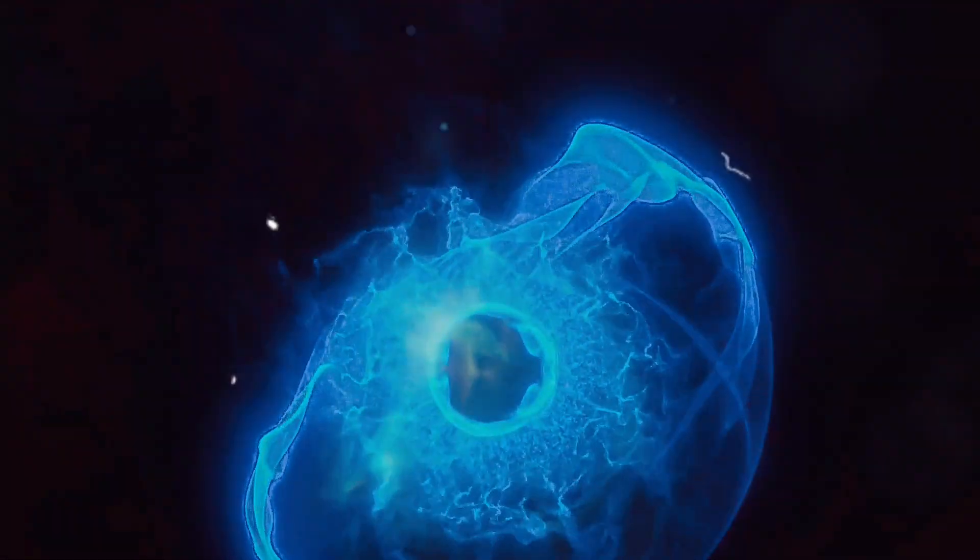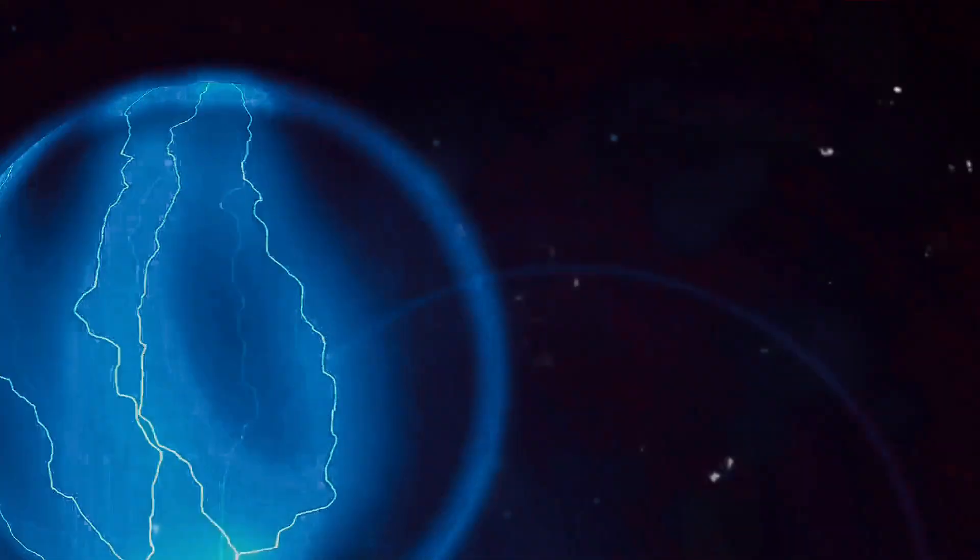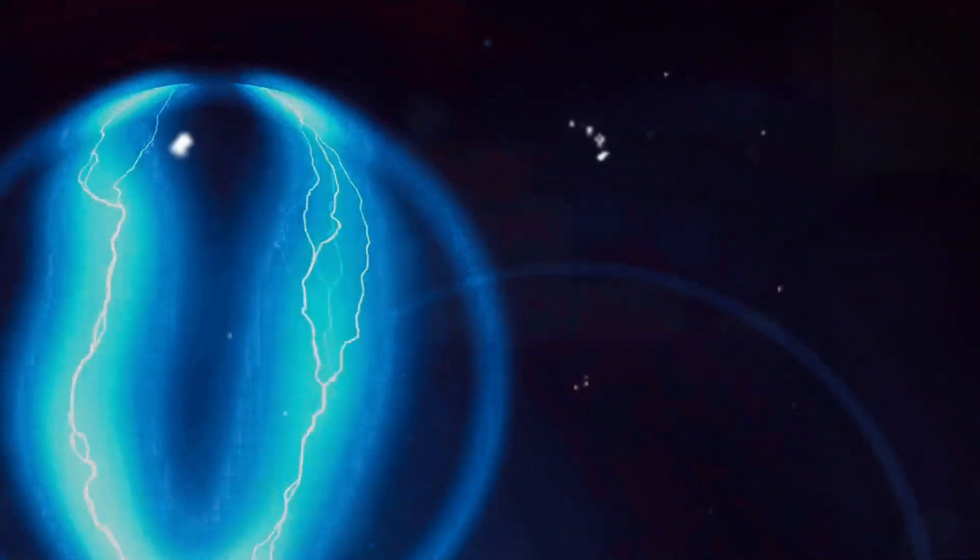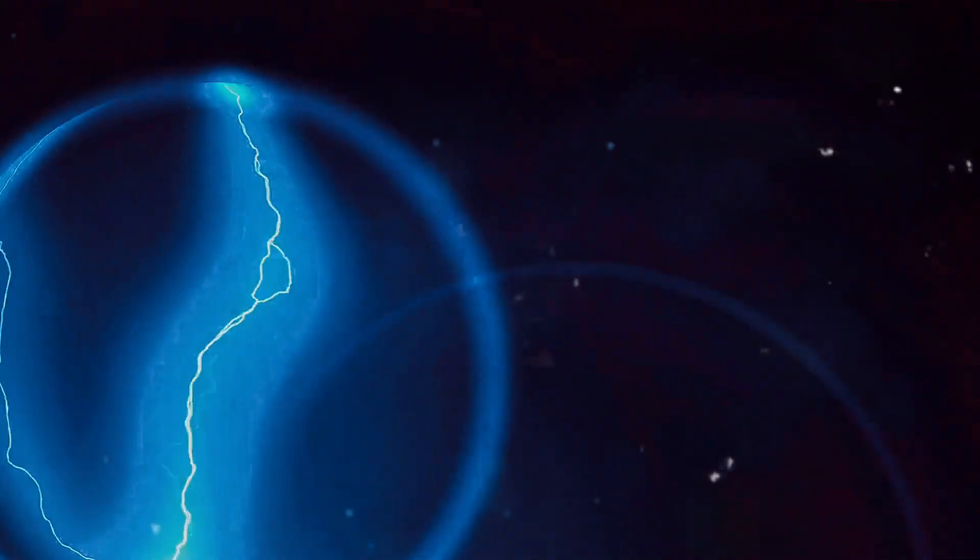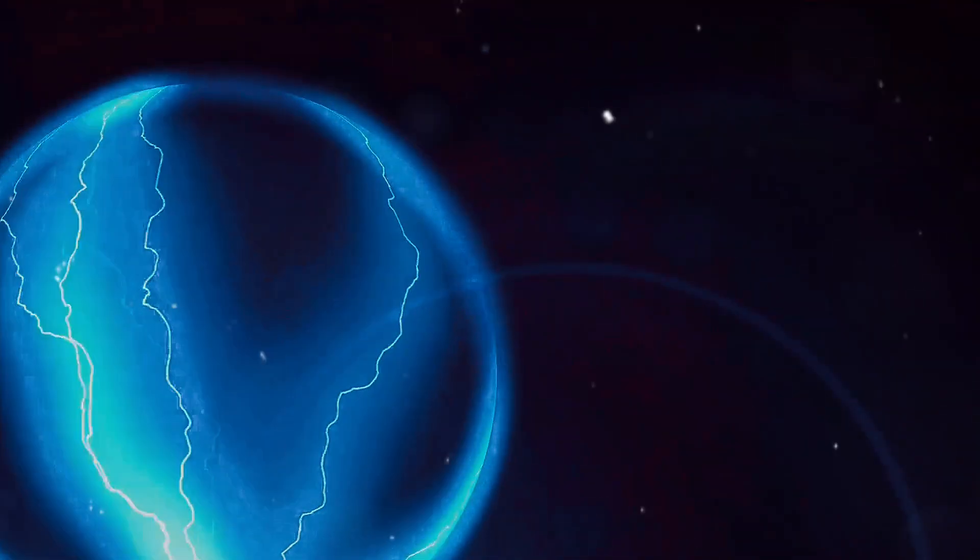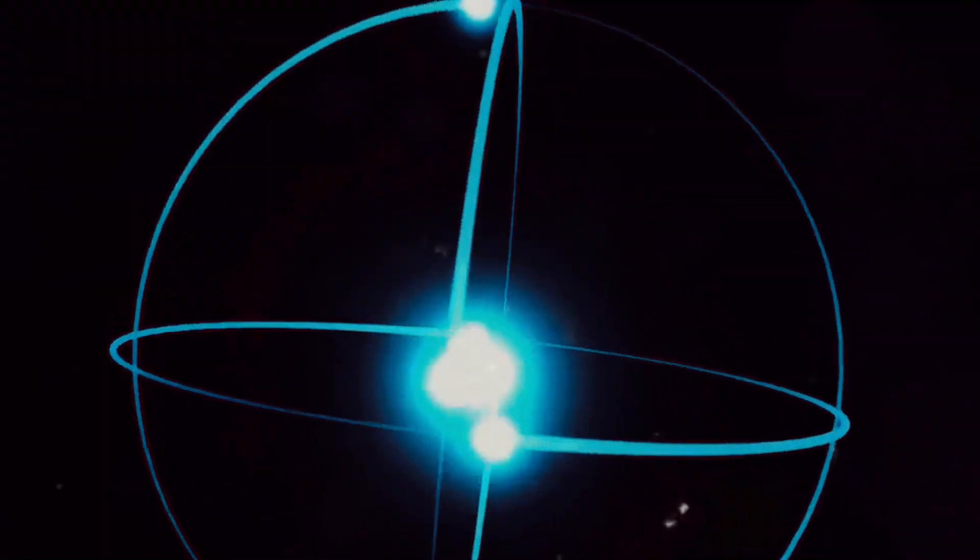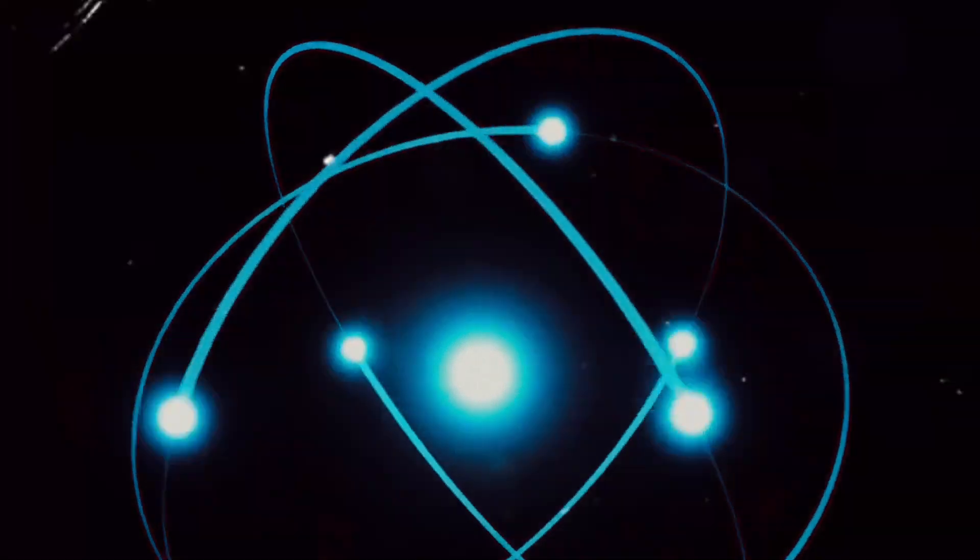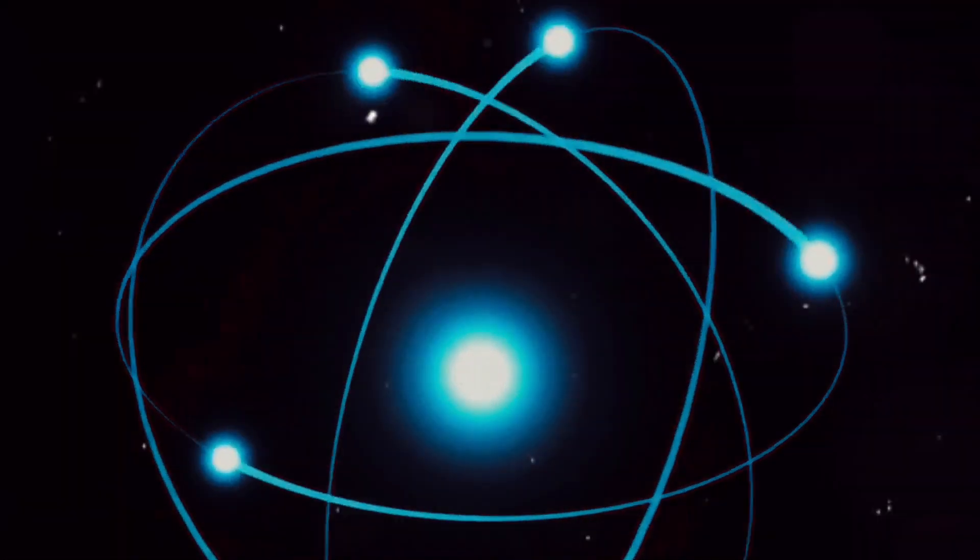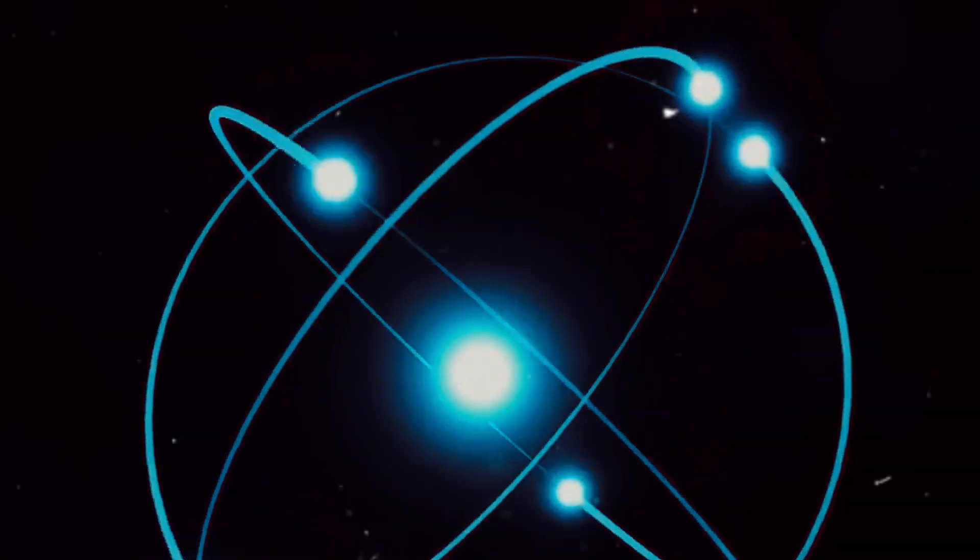Electron distancing, an invisible force that shapes our reality. But what exactly are electrons, and why do they behave this way? Let's take a closer look. Electrons are subatomic particles, the smallest of the small, but they play a crucial role in the universe's makeup. They carry a negative charge, a kind of invisible force that influences how they interact with their surroundings.